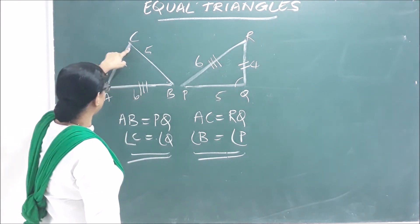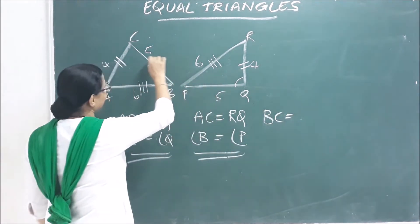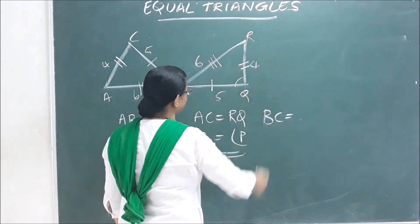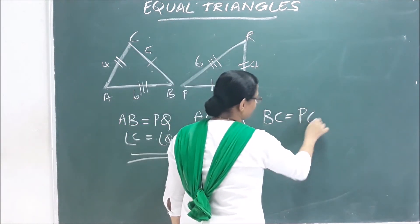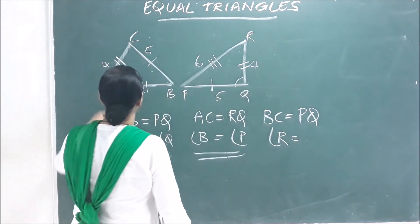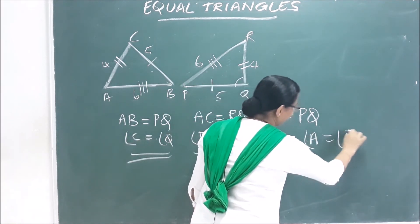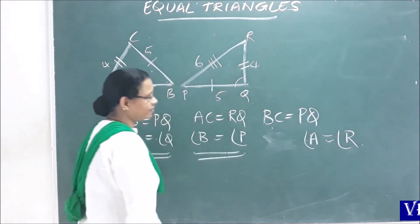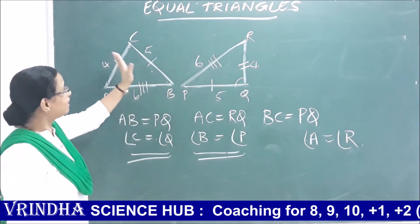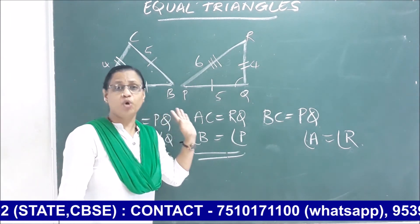Now, BC equals a corresponding side. This length is 5 cm and that length is 5 cm. PQ is opposite angle R, and angle R is equal to angle A. The three sides' opposite angles are all equal. These two triangles are equal and congruent.